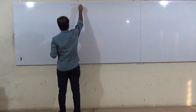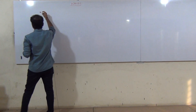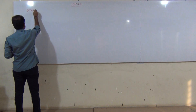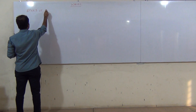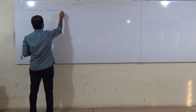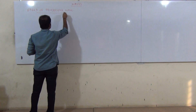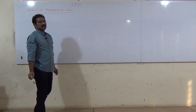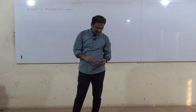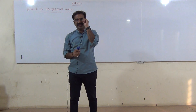Waves — and today's discussion is the speed of a progressive wave. In the previous class, we discussed about the progressive wave. The progressive wave is one in which there are continuous vibrations with constant amplitude propagating in a single direction.